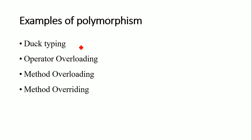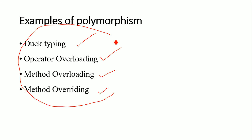There are different types of examples for polymorphism in Python: first is duck typing, second is operator overloading, third is method overloading, and fourth is method overriding. All these four are examples of polymorphism in Python. In my next videos, I will be explaining each one in detail.